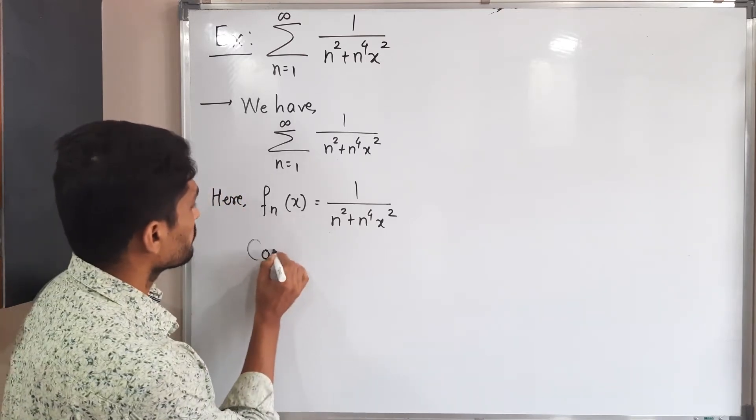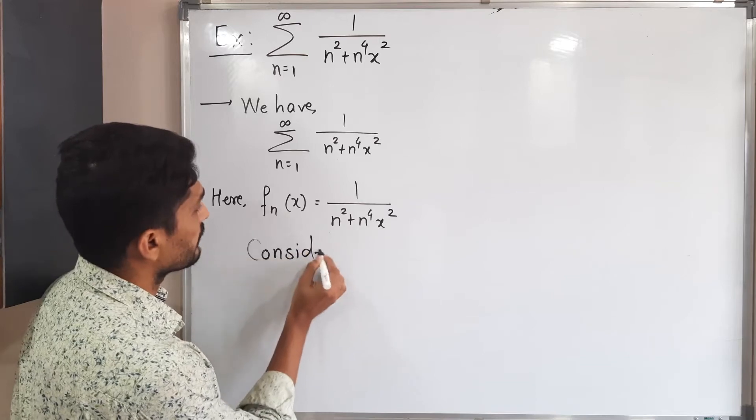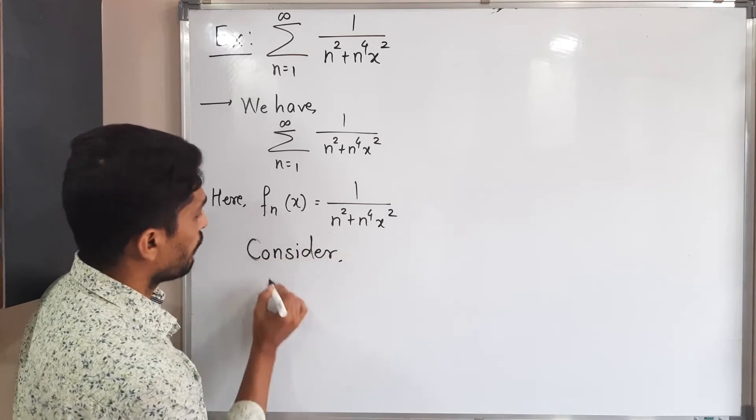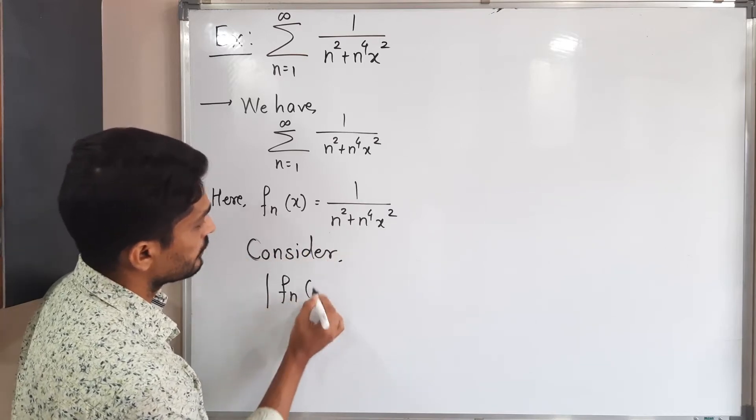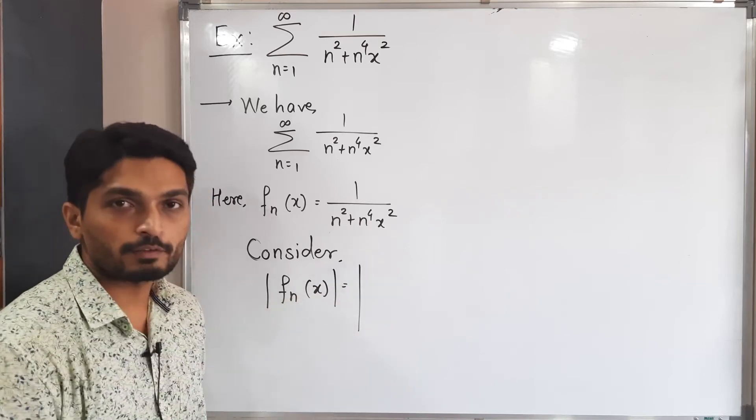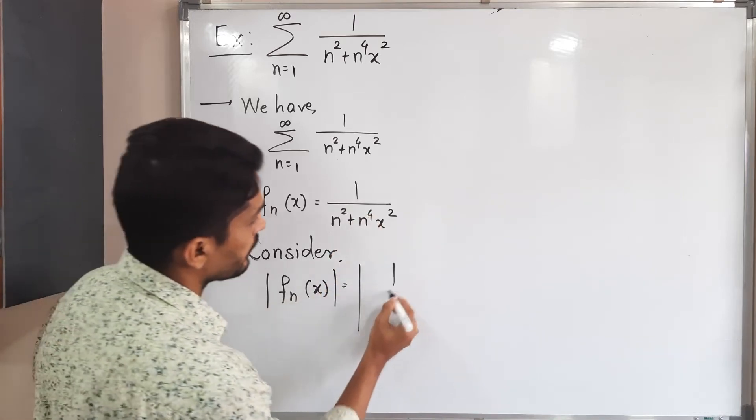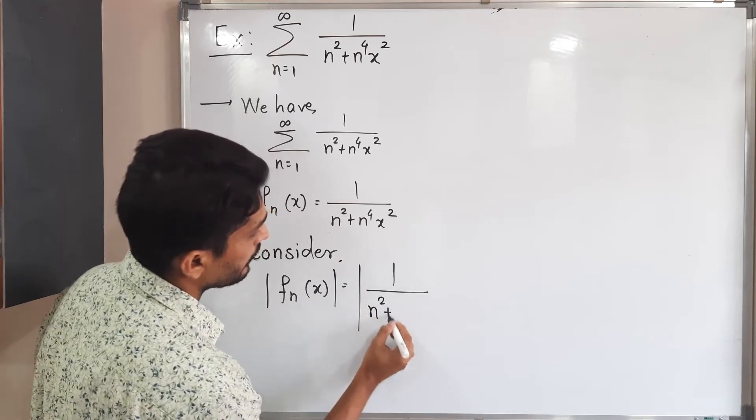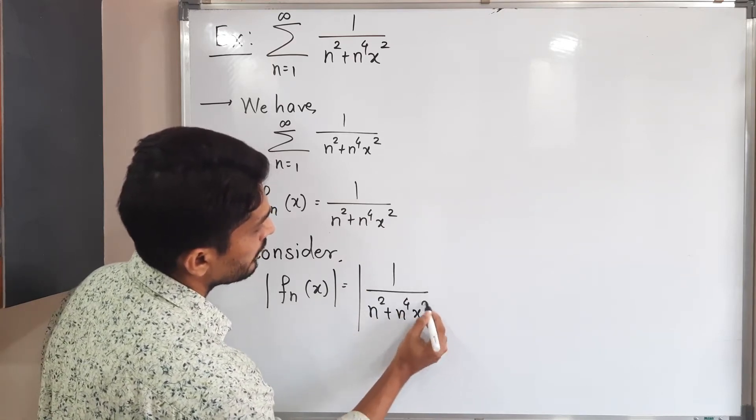So consider mod fn of x is equal to mod, what is value of fn of x? This one, let us put it here: 1 upon n square plus n raised to 4 x square.